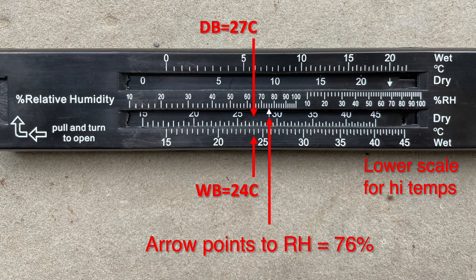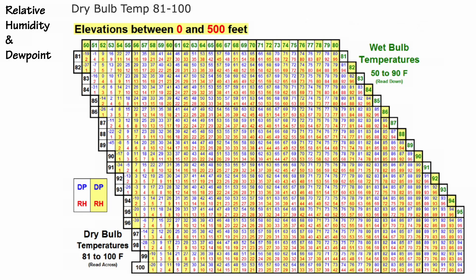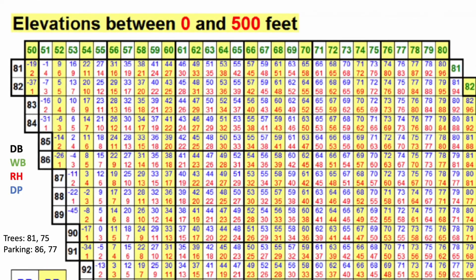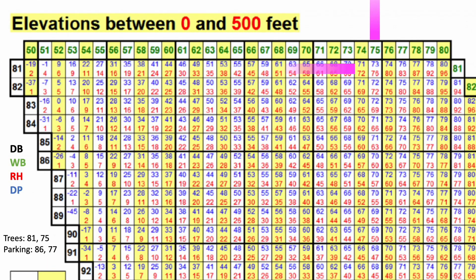With these data, we can also compute the relative humidity. Some sling psychrometers include a humidity slide rule as part of the instrument case. Here I'm showing you the relative humidity for the shady site: 76%. We can also use a table to find relative humidity and, if we want, the dew point — the temperature where water vapor in saturated air condenses to liquid. The humidity chart has dry bulb temperatures running horizontally and wet bulb temperatures vertically. We find the two temperatures we've measured, read the relative humidity off the chart — 76% for the shady site and 67% for the sunny site.